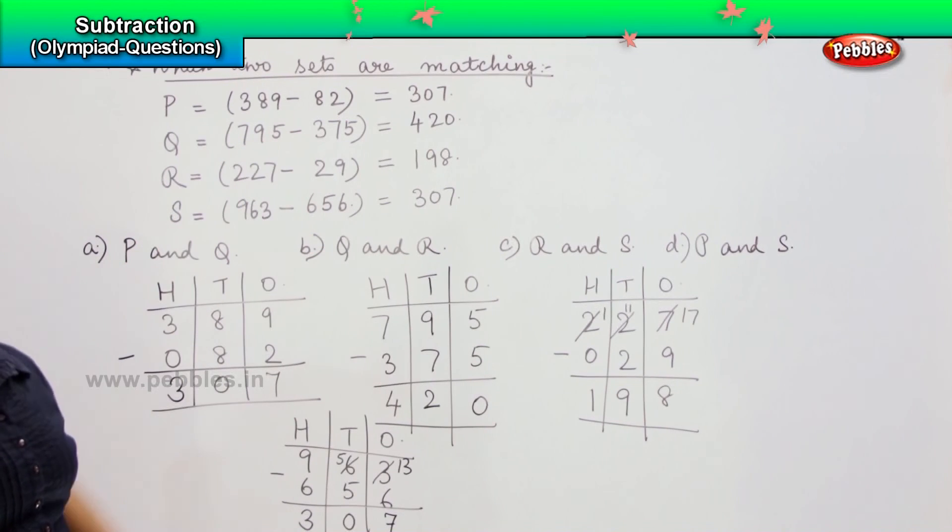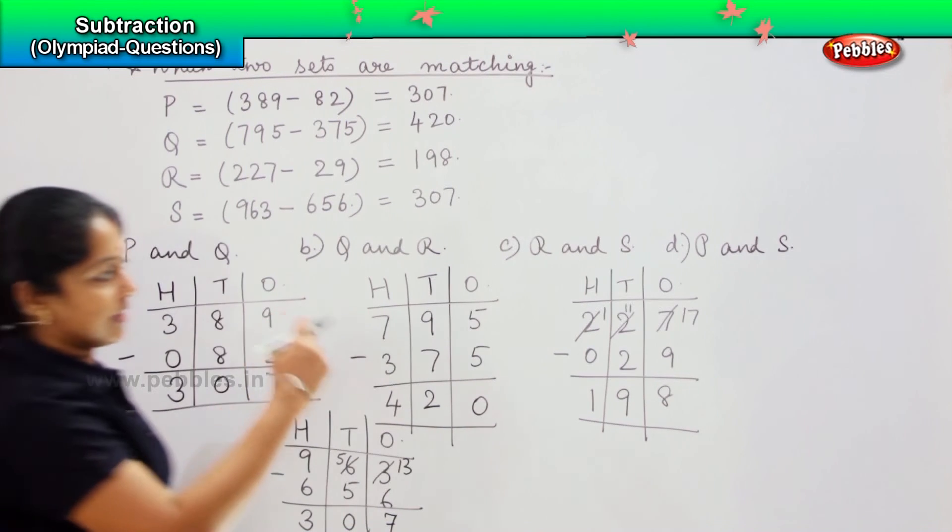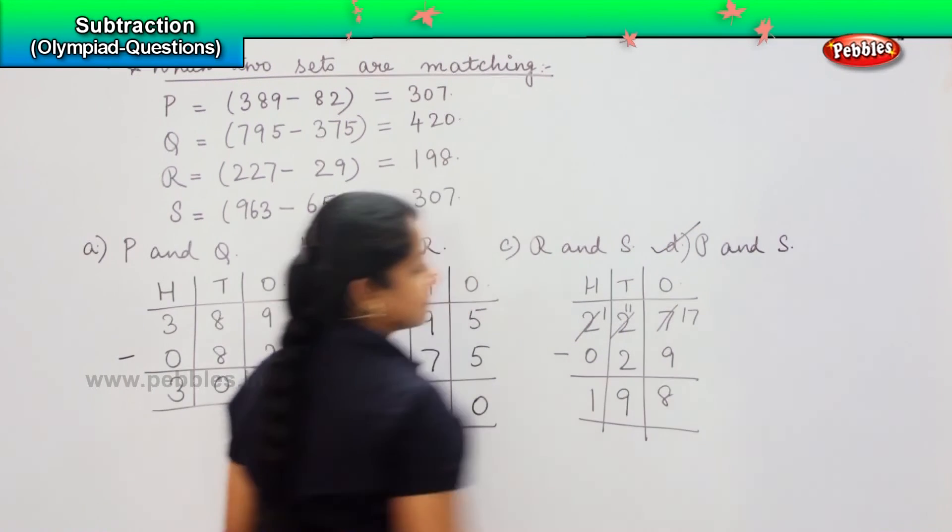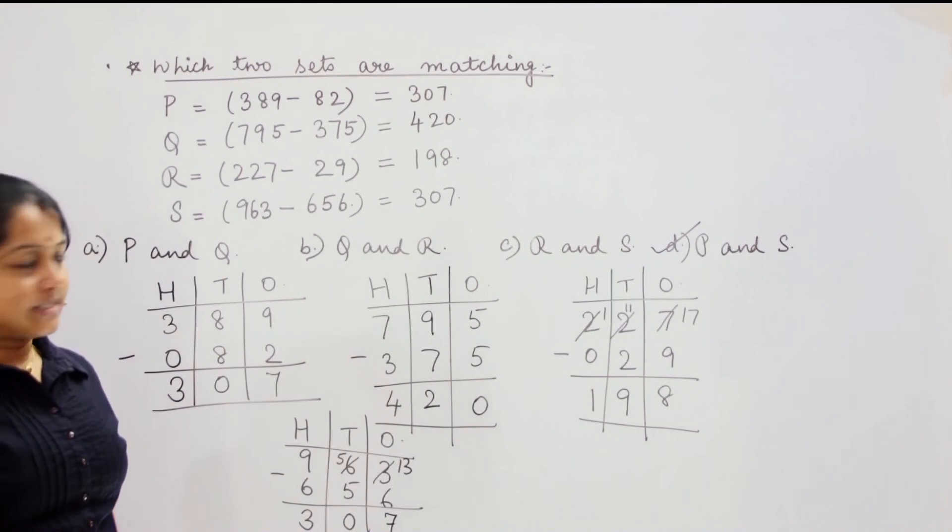So where do you think children? The pairs are matching. It is P and S, the first and the last one. So which option do you think is the right answer? Very good. It is option D. So is it easy for you to solve? Did you understand the question?